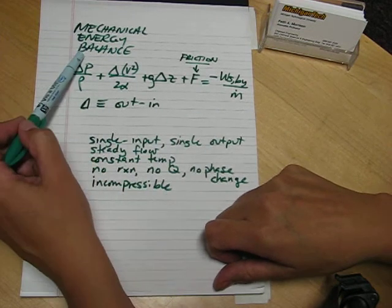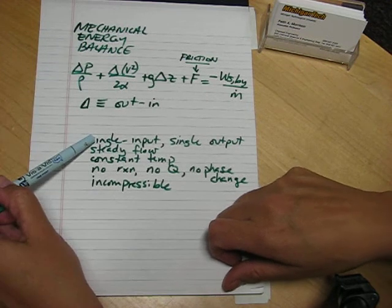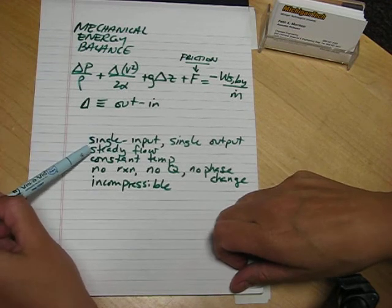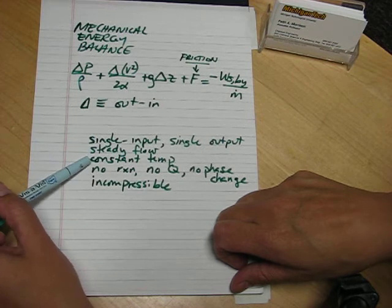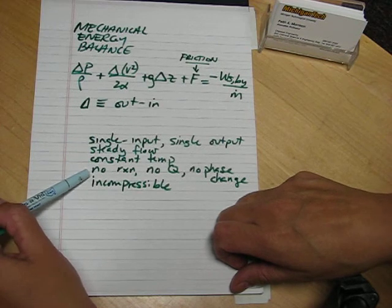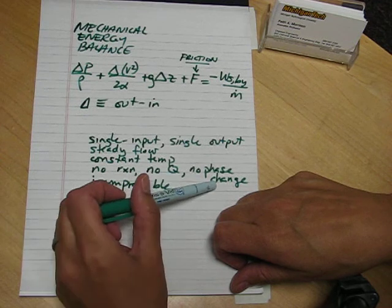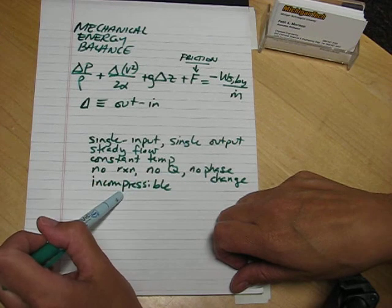The mechanical energy balance is an energy balance on single input, single output systems, where steady flow, constant temperature, no reaction, no heat flow, no phase change, and the fluid is incompressible.